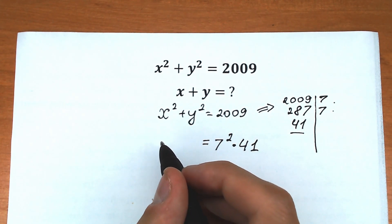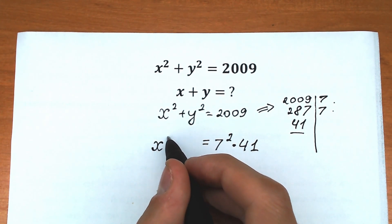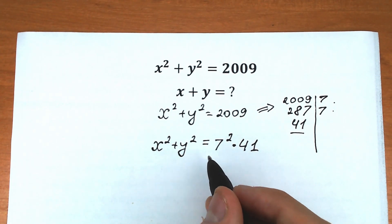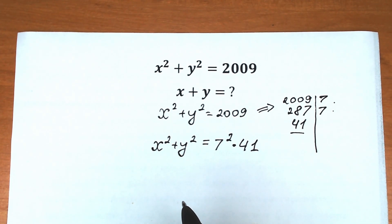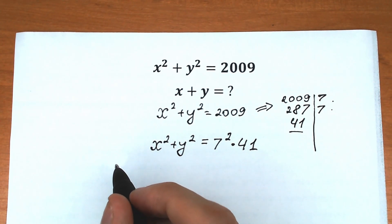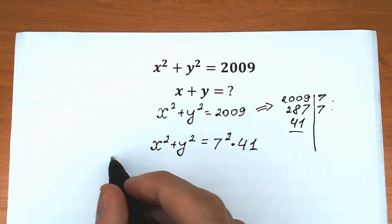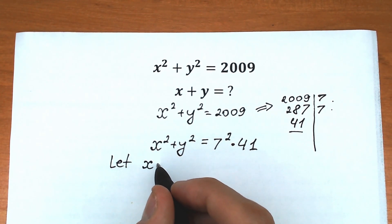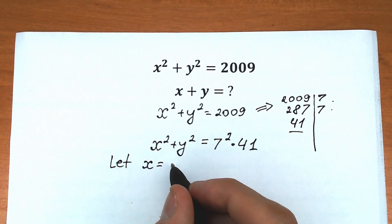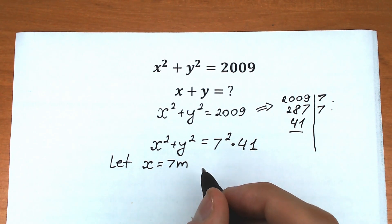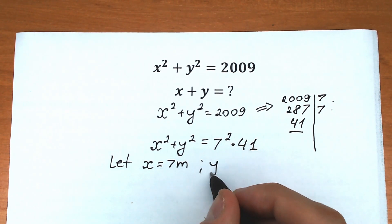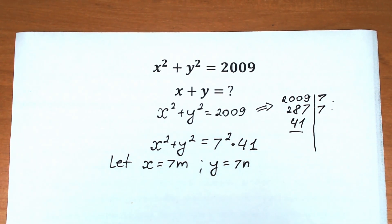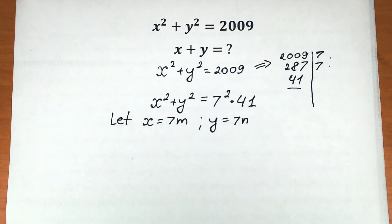So our left-hand side is x² + y², which equals 7² × 41. Now I suggest you look at this substitution: let x = 7m and y = 7n. Let's use this substitution in our challenge.